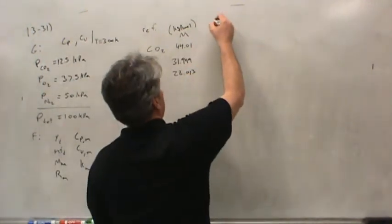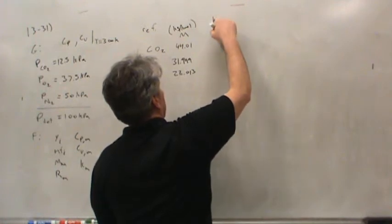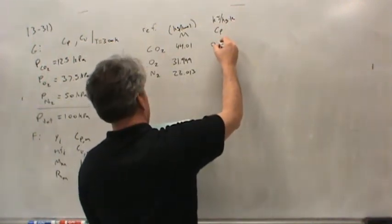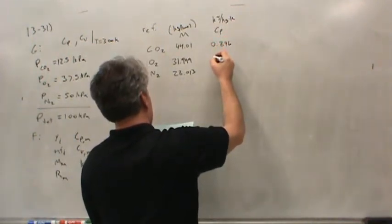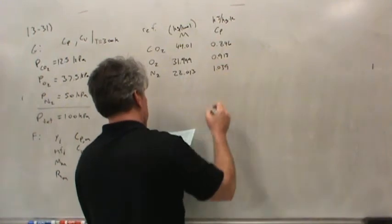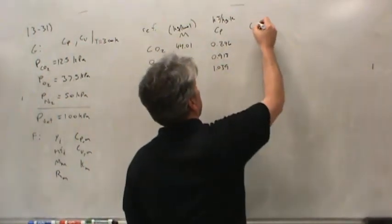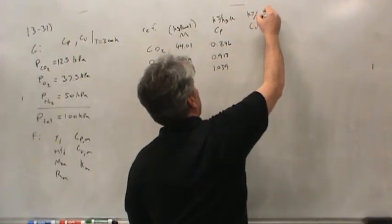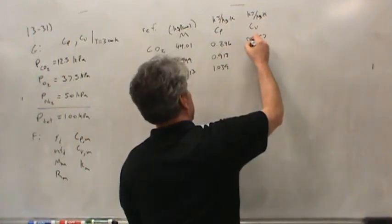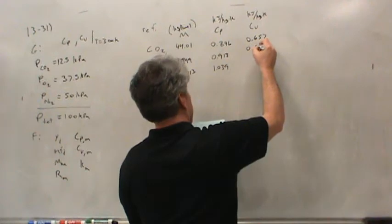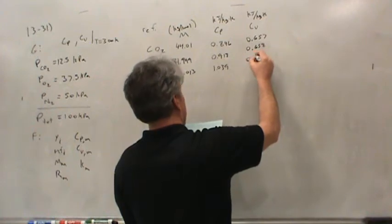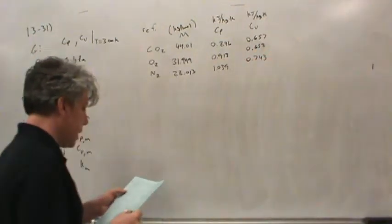The constant pressure heat capacity in kJ/(kg·K): 0.846 for carbon dioxide, 0.918 for oxygen, and 1.039 for nitrogen. The constant volume heat capacity, also in kJ/(kg·K): 0.657 for carbon dioxide, 0.658 for oxygen — very close between those two — and 0.743 for nitrogen.